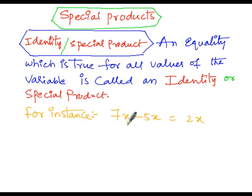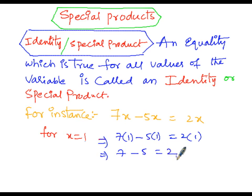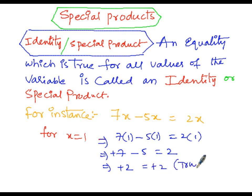The variable x must satisfy each and every real value for this to be a special product. For x equals 1: substituting gives 7 times 1 minus 5 times 1 equals 2 times 1, which simplifies to 7 minus 5 equals 2, giving 2 equals 2. The condition is true, so this equality holds for x equals 1.